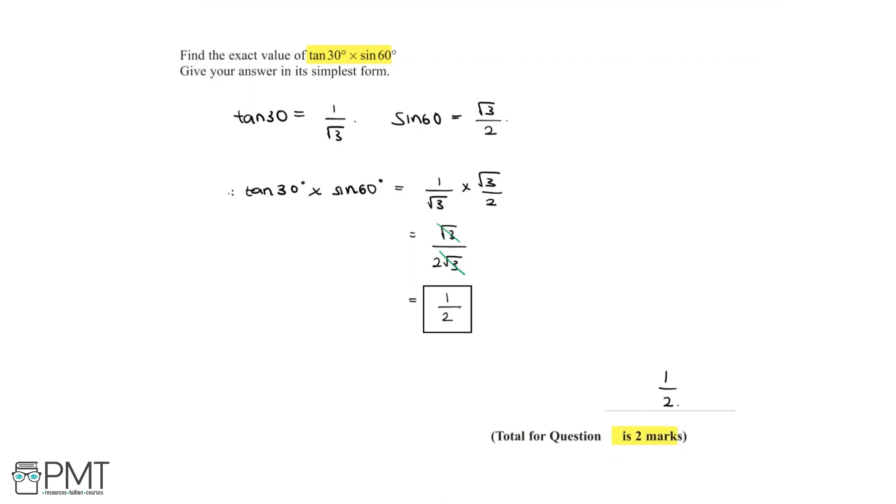Now this question is worth 2 marks. We get the first mark for a process defined, 1 over root 3 multiplied by root 3 over 2. And we get the second mark for getting the correct and final answer of 1 over 2, allowing us to get the full 2 marks needed in this question.